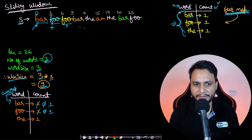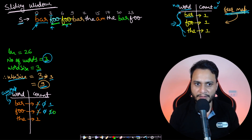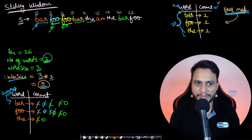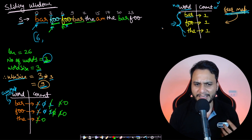Restarting from the next position, we assign the current map from the frequency map. We extract 'foo' — present, decrease frequency. Next word 'bar' — present, decrease. Next word 'the' — present, decrease frequency to zero. We have matched all three words and they were all present in the map. Therefore the current starting position, index 6, is added to our answer.